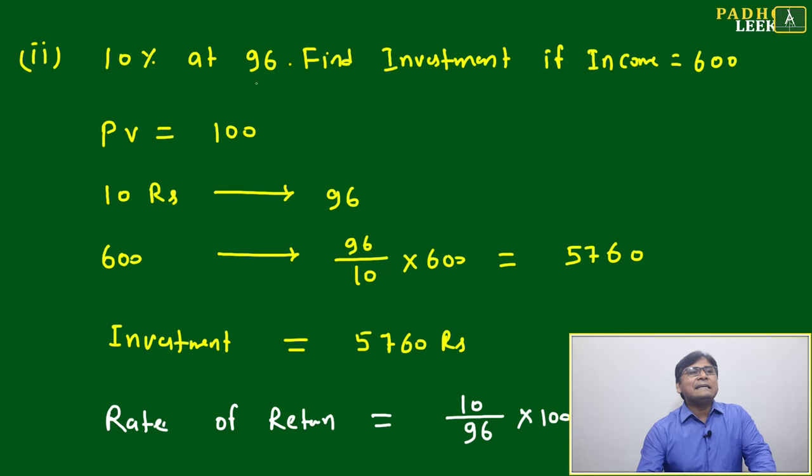Another example: 10% at 96, find investment if income equals 600. This question deals with different parameters. Total income is given as 600, and the share is given as 10% at 96.